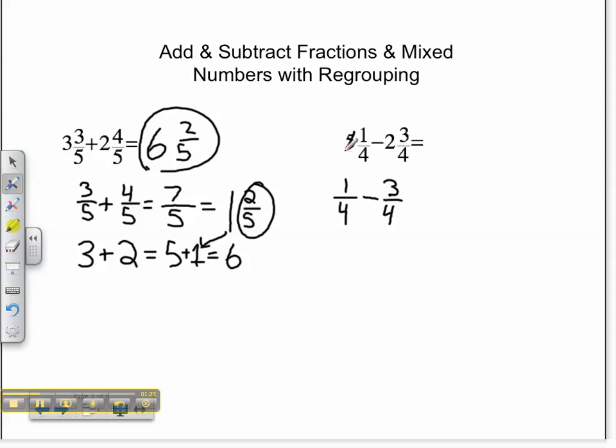I've got to borrow from my whole number. So I'm going to turn this 5 into a 4. That whole number I just added is the same as 4/4. So I'm going to add that 4/4 to my 1/4 to make it 5/4. So this now becomes 5/4.